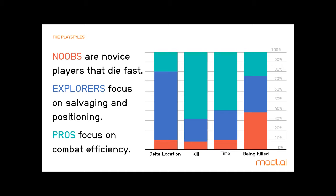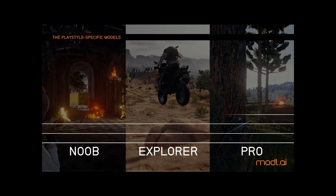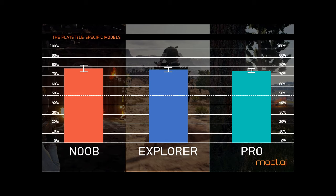Interestingly, play style doesn't correlate with popularity, as many popular streamers had a lot of Noob matches. With this knowledge, we returned to modeling by adding an extra step: first finding the play style over a given match, then training and employing a model specific to that play style. This brings us closer to the performance of individual models, with over 77% average accuracy, up to 84% in the best cases. As a final step, we integrated the prediction model into an online app which visualizes the predicted engagement generated by a stream.